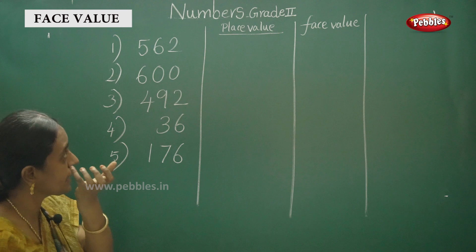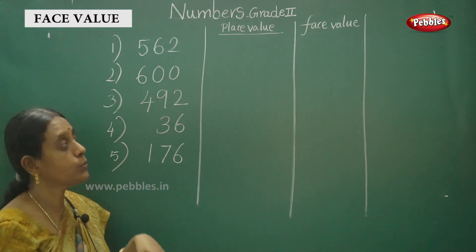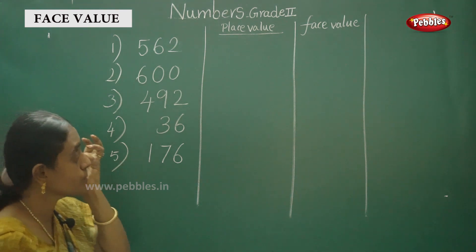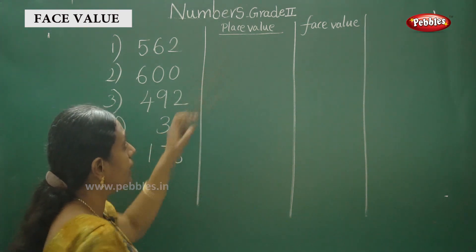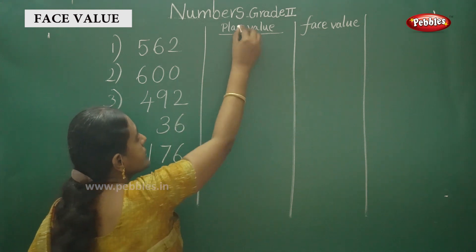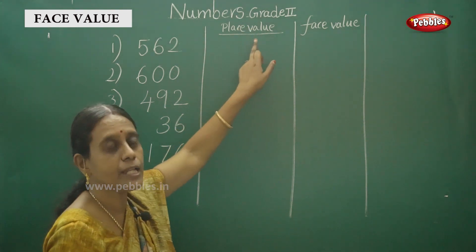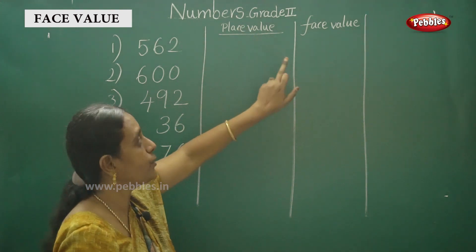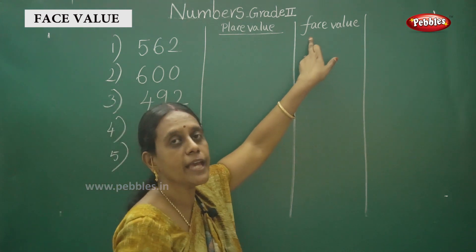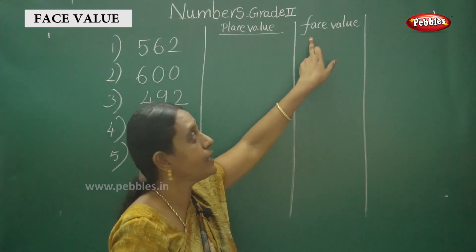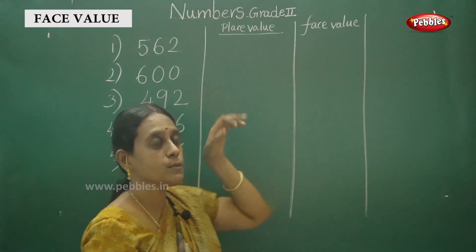Okay — place value, face value. Face value spelling here — place: P, L, A, C, E — value: V, A, L, U, E — value. Face: F, A, C, E — value. Face value.